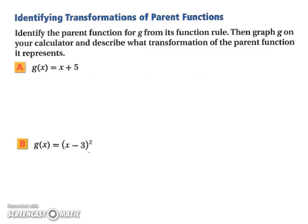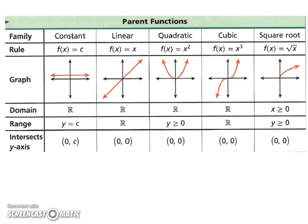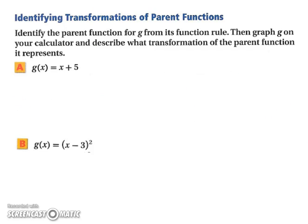Let's look at identifying transformations of parent functions. Identify the parent function for g from its function rule. Then graph g on your calculator and describe what transformation of the parent function it represents. Let's start with this first one. g(x) equals x plus 5. So, first off, we know that because it's not a square, it's not only a constant, we're going to have a linear function. So therefore, we know that this is linear.